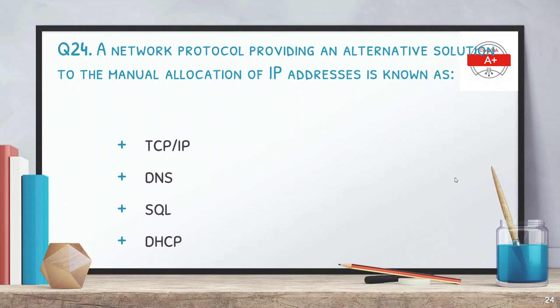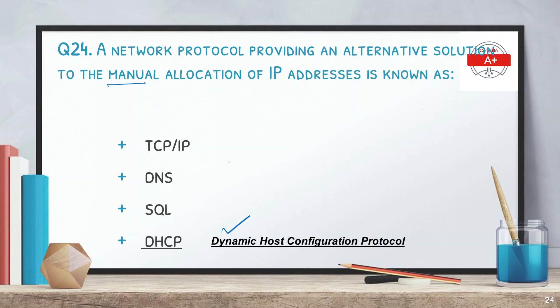The next question: a network protocol providing an alternative solution to the manual allocation of IP addresses is known as — options are TCP/IP, DNS, SQL, and DHCP. The answer is DHCP, Dynamic Host Configuration Protocol. If you know the abbreviation, the word 'dynamic' tells you it is the alternative to manual IP address configuration.